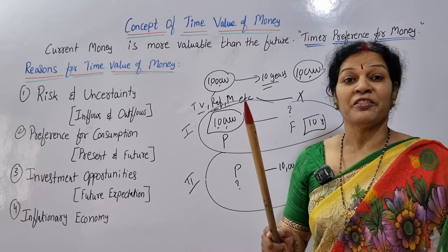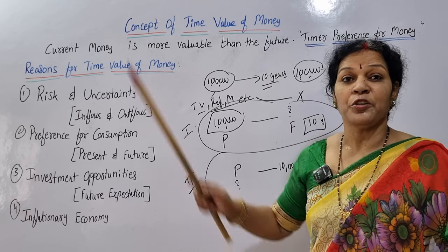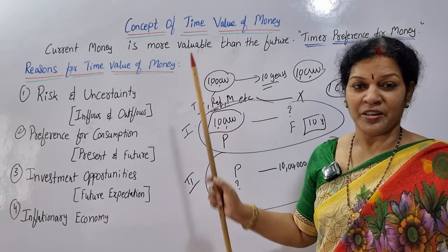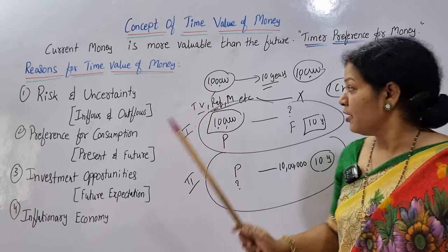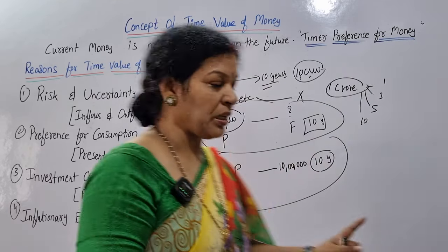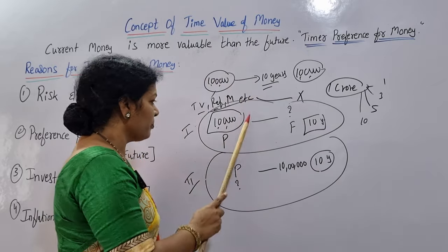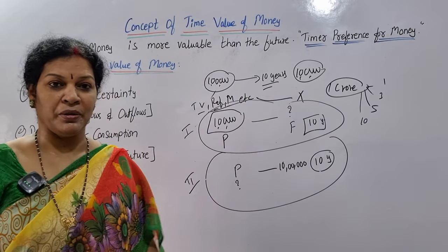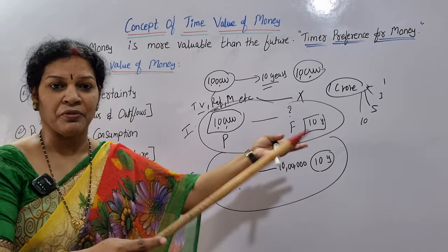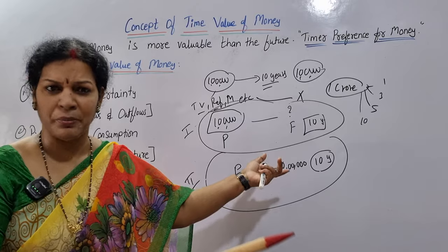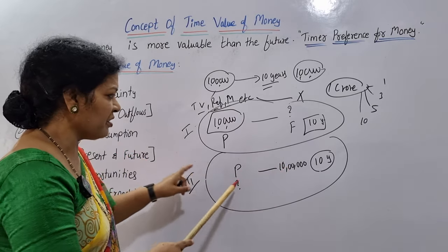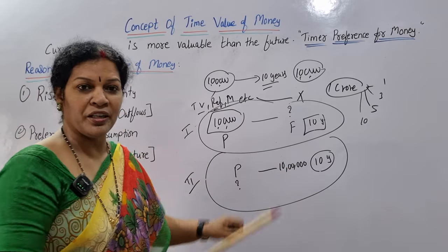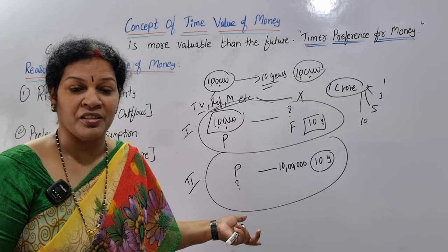So mainly you have to remember this concept of Time Value of Money: you have 1 lakh rupee at present — how much will it be after 5 or 10 years, whatever period you are expecting? And similarly, after 10 years you are going to get 10 lakh rupees — right now how much is that worth?